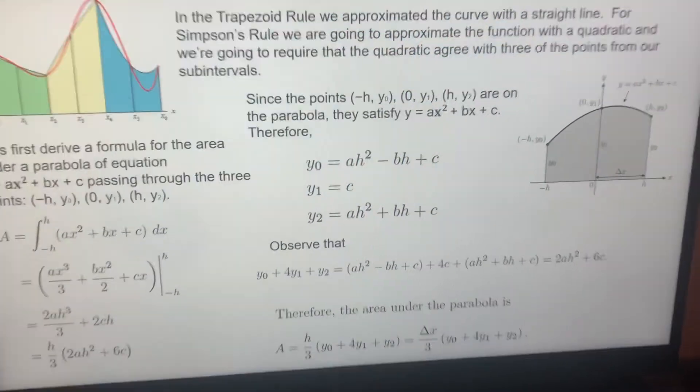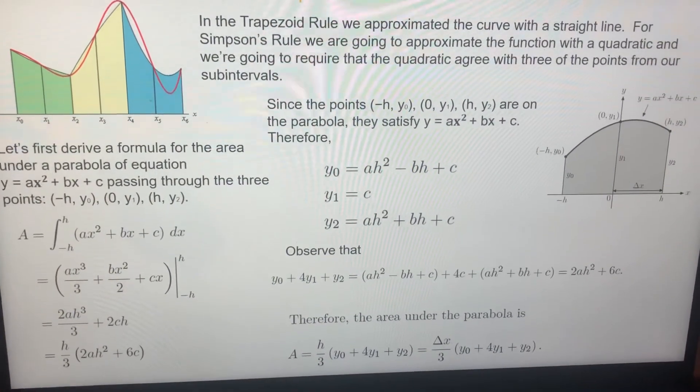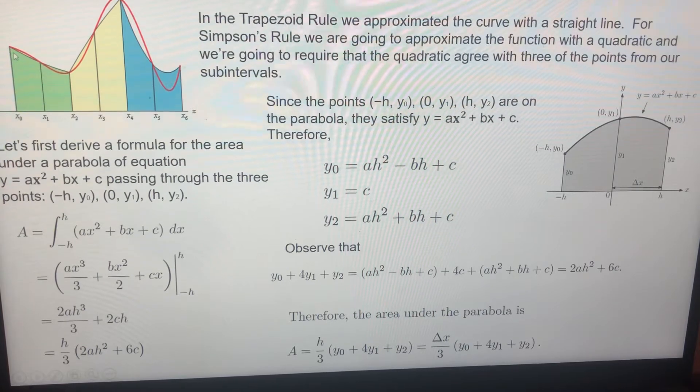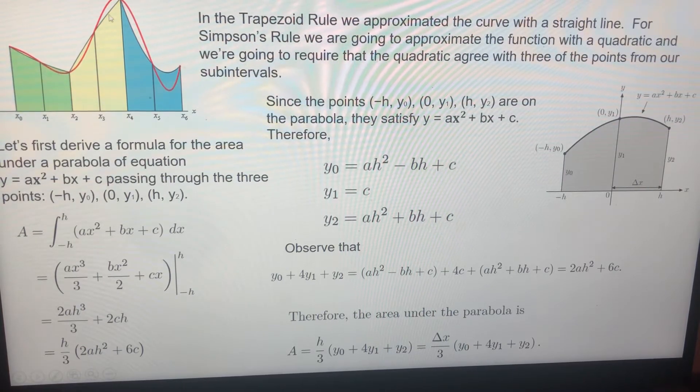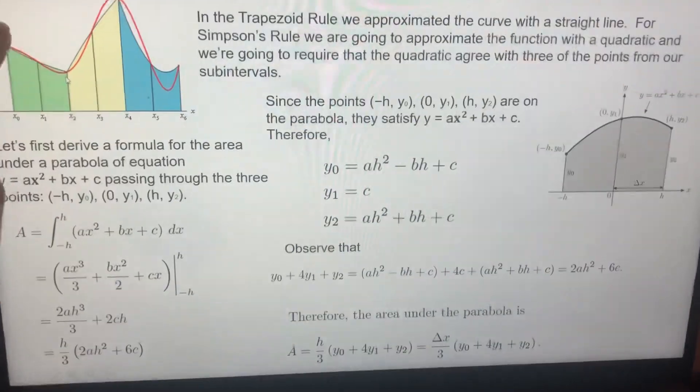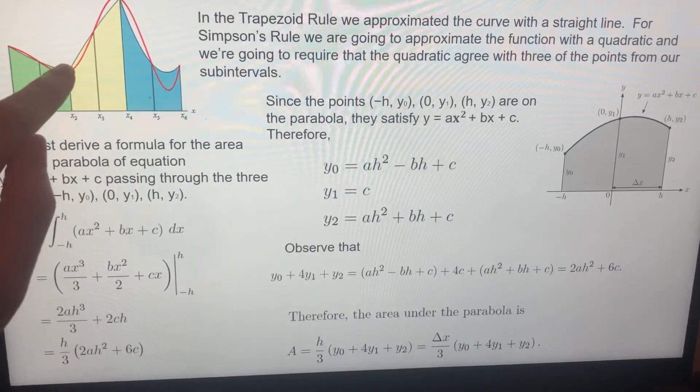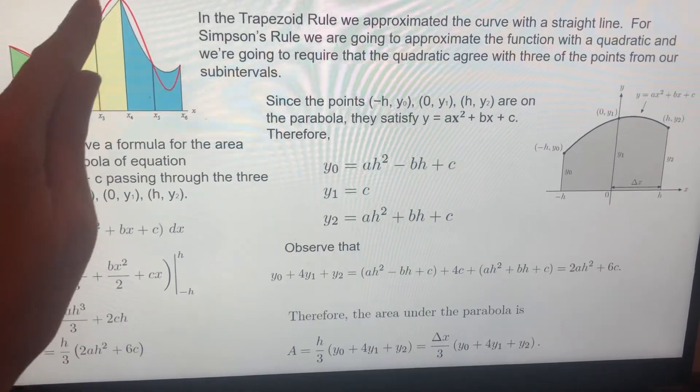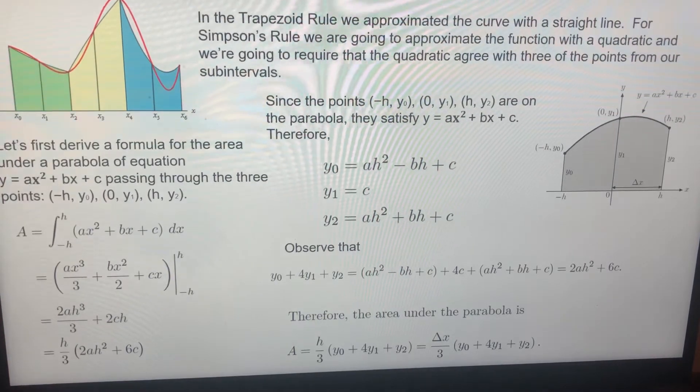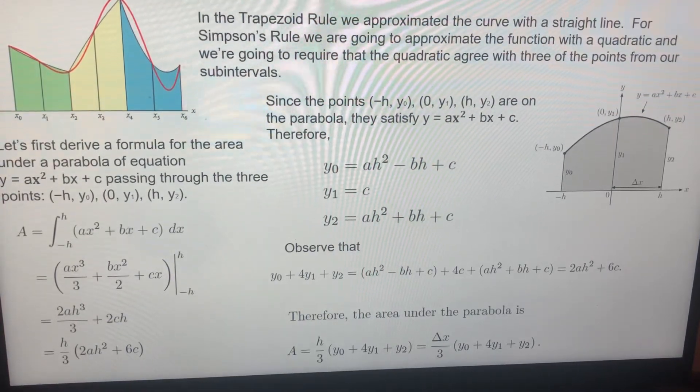So how is Simpson's rule working? For the trapezoid rule, we were approximating with linear lines. But for Simpson's rule, for each three points we are approximating a quadratic function. For each three points, one, two, three, we are approximating this. For the other three we are approximating things, and we are dealing with the integral of it.